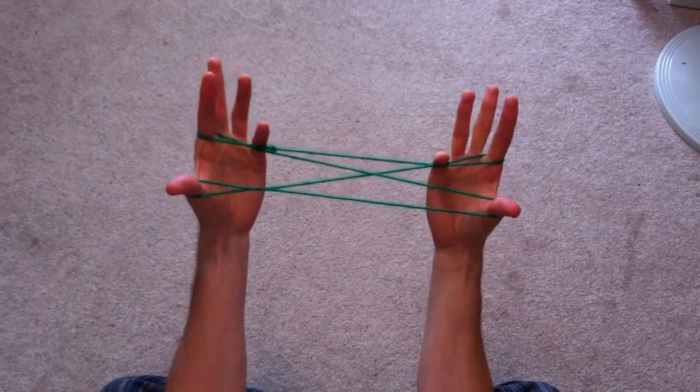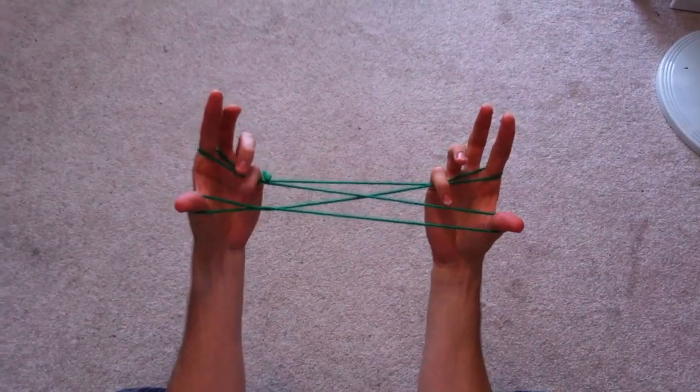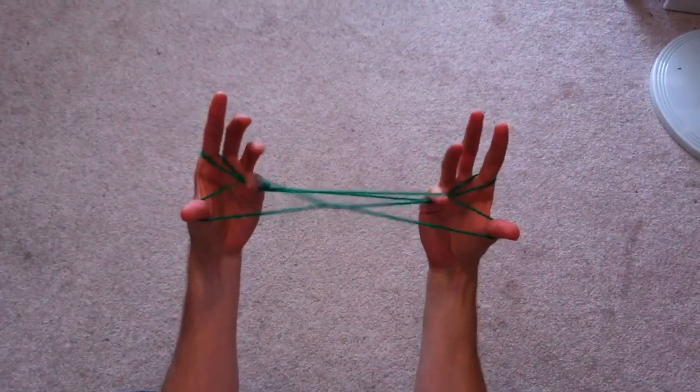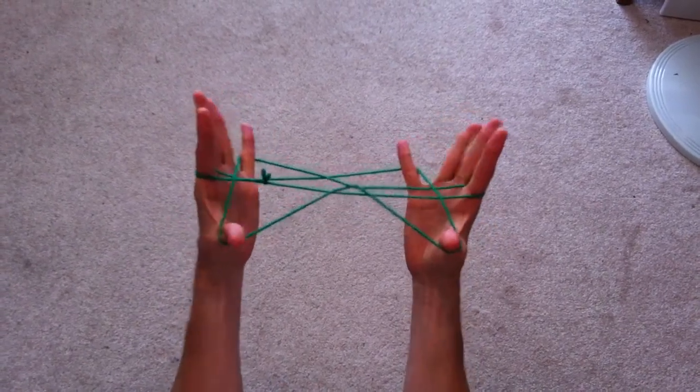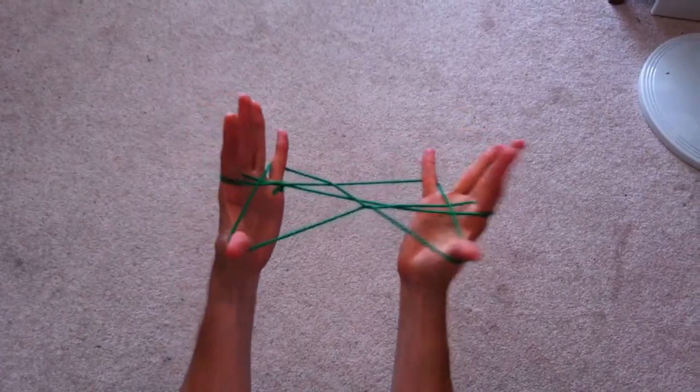Now take your pinkies and have your pinkies take your far thumb strings. That's these two strings here and they pull them out, and now you finish like regular bridge.